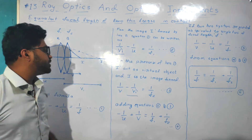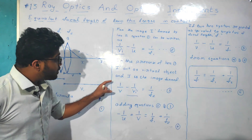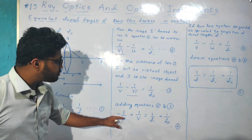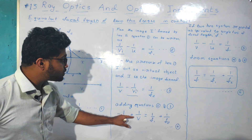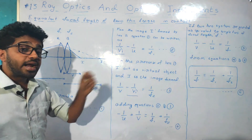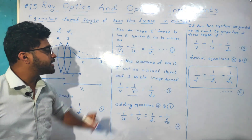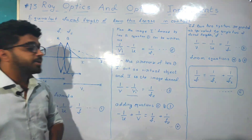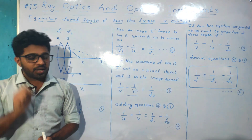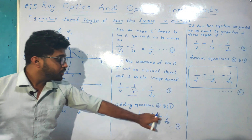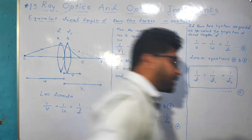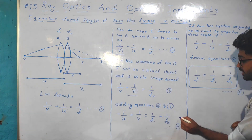Now adding equation 2 and equation 3, we get: 1 by v minus 1 by u on the left-hand side, and 1 by F1 plus 1 by F2 on the right-hand side. This gives us equation number 4.